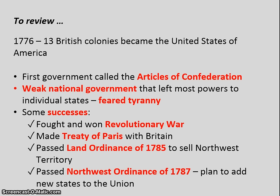This government had a number of successes. It fought and won the Revolutionary War. It made the Treaty of Paris with Britain, ending that war. It passed the Land Ordinance of 1785 to sell the Northwest Territory in pieces and created the township system. And it passed the Northwest Ordinance of 1787, which was a plan to add new states to the Union — very important to the nation's future as it expanded west.